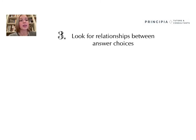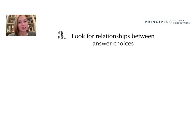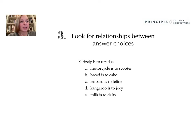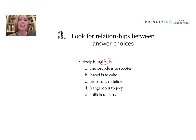Our third strategy is to look for relationships between the answer choices. This is a little bit backwards from how you would approach a normal analogy question. Here, you're going to create an analogy sentence for the answer choices and see if that pattern seems possible for the question. Let's try this out with a practice question. Our analogy is grizzly is to ursid. Let's say I don't know what the word ursid means, so I'm going to try creating an analogy sentence for each of my answer choices and then seeing if that seems possible for my question.